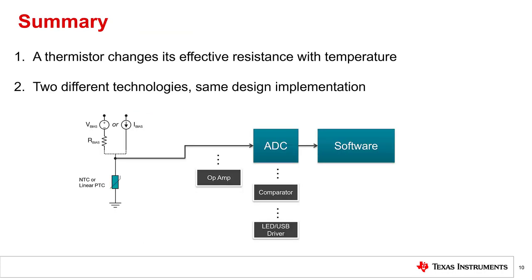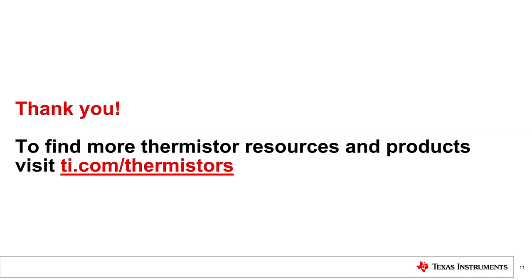To summarize, a thermistor changes its effective resistance across temperature. There are two main thermistor technologies used for normal temperature sensing, and although there are slight differences in the characteristics and performance between these two types of thermistors, both can be used in the same fashion. Once you start designing, there are many factors that come into play to optimize your thermistor design. In the next video, we'll cover these design considerations and provide some insight into optimizing your thermistor solution. Thank you for watching this introductory video on thermistors used for temperature sensing. For more information, please visit ti.com/thermistors.